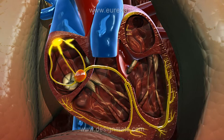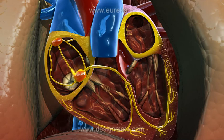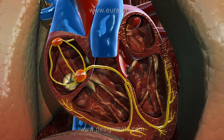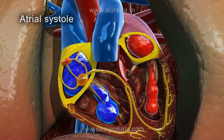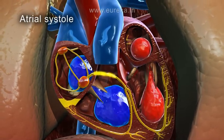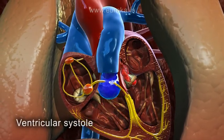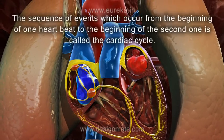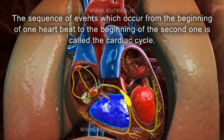Heart muscles continuously generate impulses, which cause the rhythmic contraction and relaxation of the atria and the ventricles. These impulses are generated by the sinoatrial and auriculoventricular node. Inside the heart, blood flows in a specific direction. The contraction of the atria is called the atrial systole. At this time, the ventricles are in diastole. Then the ventricles contract, and this is called ventricular systole, and the atria are in diastole. This sequence of events, which occur from the beginning of one heartbeat to the beginning of the second one, is called the cardiac cycle.